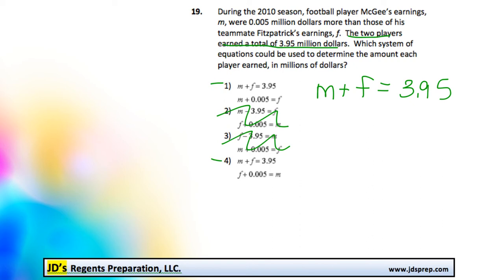Now, the other piece of information is that McGee's earnings, or M, is $0.005 more than F. That means M is going to be $0.005 more than F.